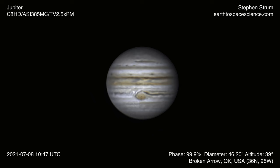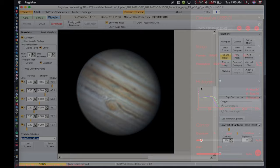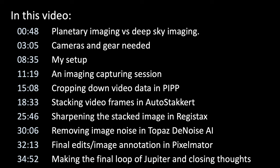Hey, it's Steve. In this video I'm going to go through my entire planetary imaging process from start to finish — looking at the types of cameras I use, how I actually set up my telescope to do the imaging process, how I take the data, and how I process the data. We'll look at the differences between planetary imaging and deep sky imaging, the cameras and gear you need, an actual image capturing session, and then how I process the data in PIP, AutoStacker, RegiStax, and Topaz Denoise, with some closing thoughts at the end.